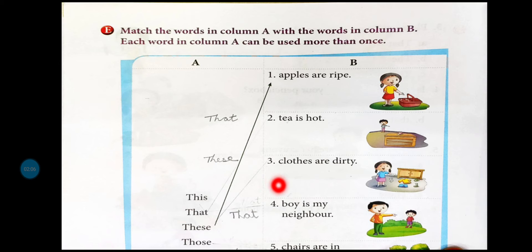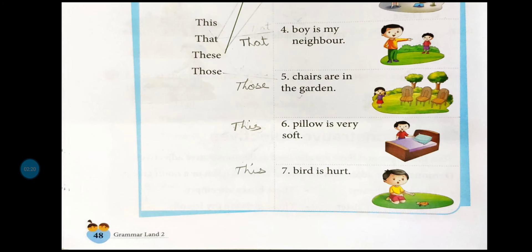Clothes are dirty - clothes دیکھو پاس میں ہے اور plural form میں ہے تو these clothes are dirty. Boy is my neighbour - یہ boy جو ہے وہ دور کھڑا ہوا ہے اور singular form میں ہے تو that boy is my neighbour. Chairs are in my garden - یعنی دور رکھی ہوئی chairs ہے اور plural form میں ہے تو those. Pillow is very soft - pillow نزدیک میں رکھا ہوا ہے - this pillow is very soft، ایک ہی ہے۔ Bird is hurt - یہاں پر bird نزدیک میں ہی ہے اور ایک ہی ہے تو this bird is hurt.